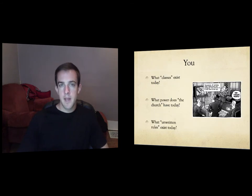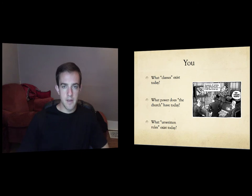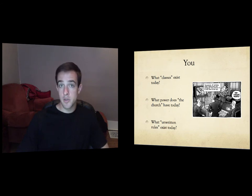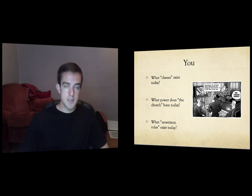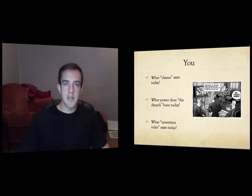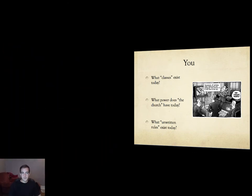Before we move on, I want you to think of a few things in this video. Number one, what classes exist today? We don't really have formal classes in America. We hear about the upper class and the lower class in the news, but what classes exist today? Number two, think about the church as an organization. What type of power does it have? What type of political power does it have? Can the church do whatever it wants, or is it confined by other organizations? And finally, think about unwritten rules. What are some things that you personally are allowed or not allowed to do based not on a written law, but an unwritten law? Not just your parents' rules — what is considered socially unacceptable in high school culture, in adult culture, in whatever culture you find yourself?